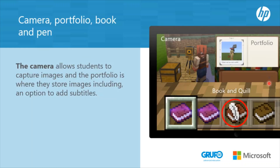Camera, Portfolio, Book, and Pen. The camera allows students to capture images, and the portfolio is where they store images, including an option to add subtitles. With the use of the camera, portfolio, and pen, students can document their work and share it in class. This feature can be used as an evaluation tool — the images, or a PDF, can be exported.